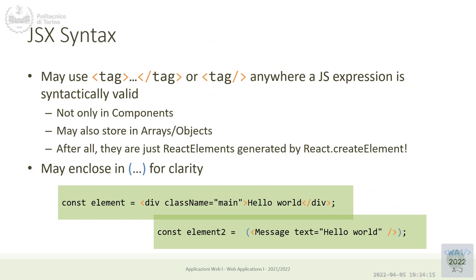The JSX syntax may be used anywhere. Normally we use it in the return statement of a component function, but we may also use it for storing some data into an array — it just creates an object. Think of it as an alternative syntax for creating objects. These objects will be of type React element, but they are normal objects. You can store them into lists, pass them around as parameters — it's just another syntax for creating objects.